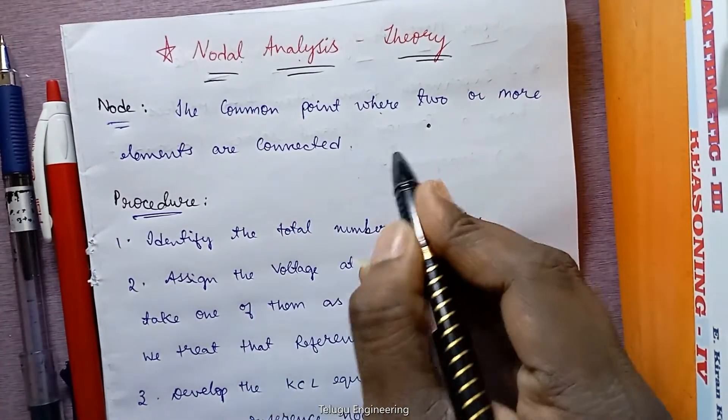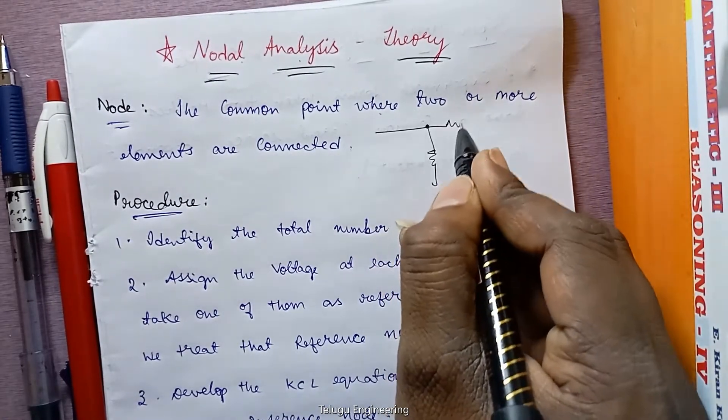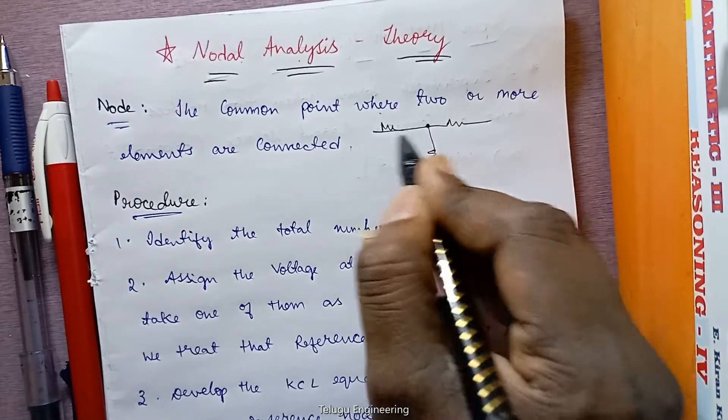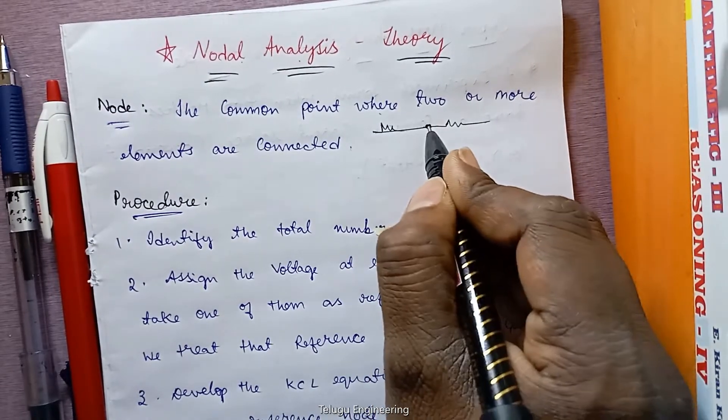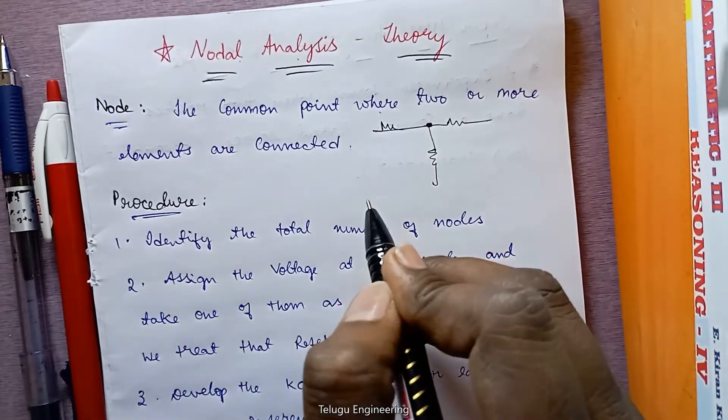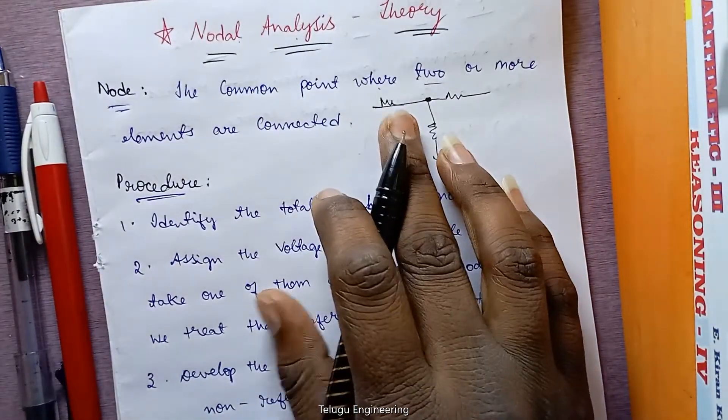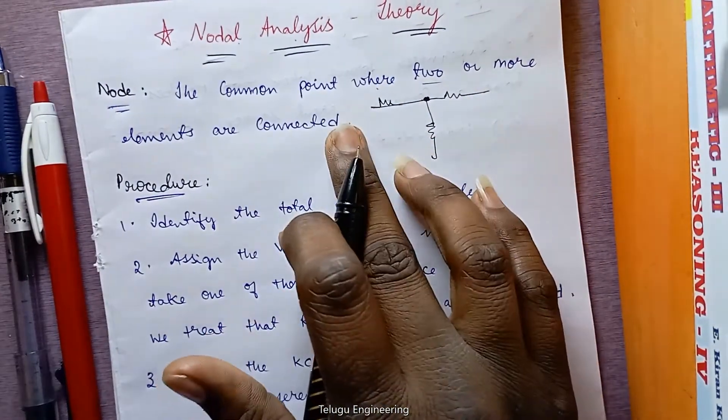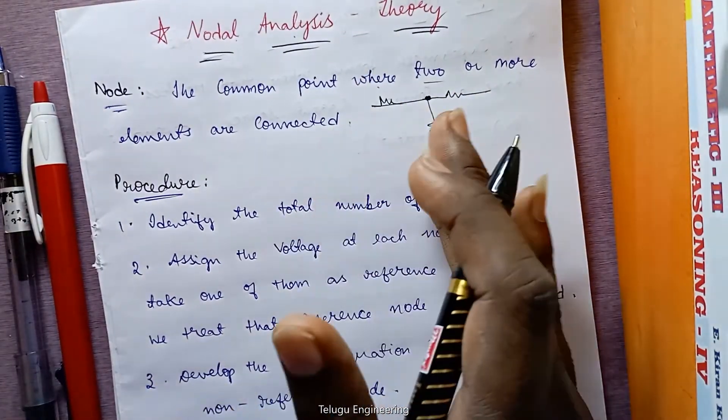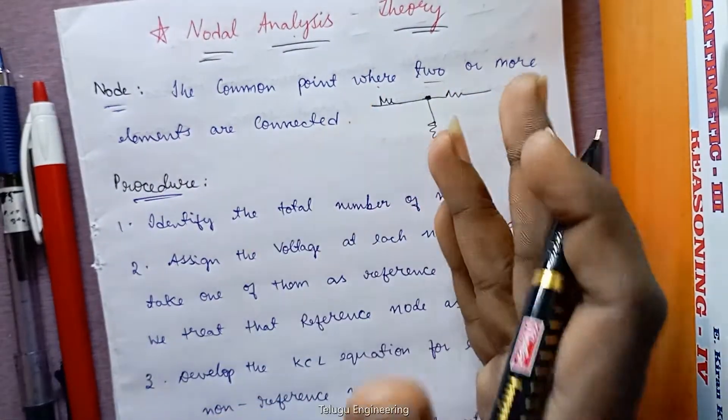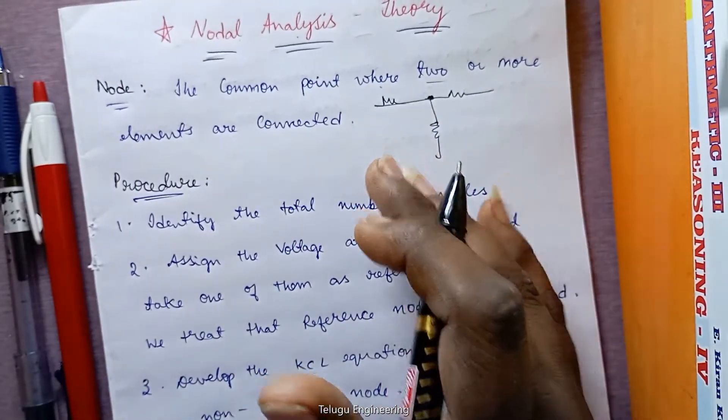Like here, when resistors are connected, when two or more elements are connected, then we call it a node. And nodes have two types: simple node and principal node. Simple node is when only two elements are connected. Principal node is when more than two are applied. So more than two applied, we call it as a principal node.